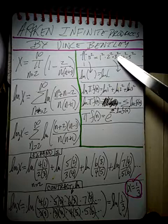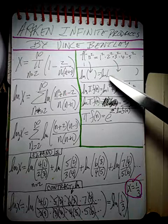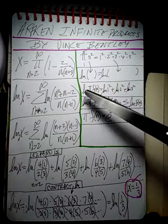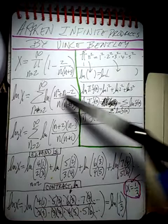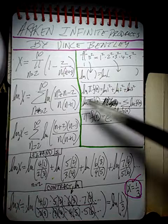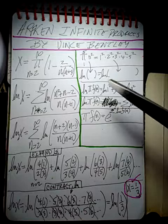So what we see is that when you take the natural log of a product, the natural log of a product, you can bring the natural log in and it changes the product into a sum. The product changed into a sum of natural logs. The natural log of a product is the sum of the natural log of the term equation there.